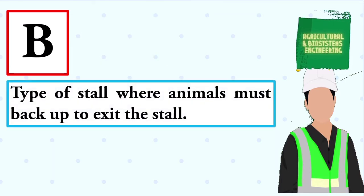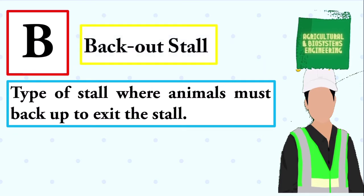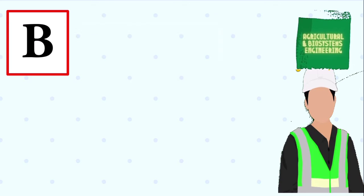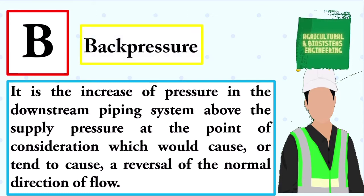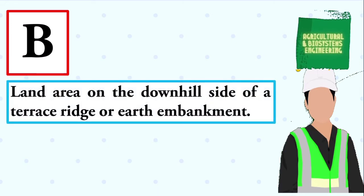Type of stall where animals must back up to exit the stall. The answer is: back out stall. It is the increase of pressure in the downstream piping system above the supply pressure at the point of consideration, which would cause, or tend to cause, a reversal of the normal direction of flow. The answer is: backpressure.